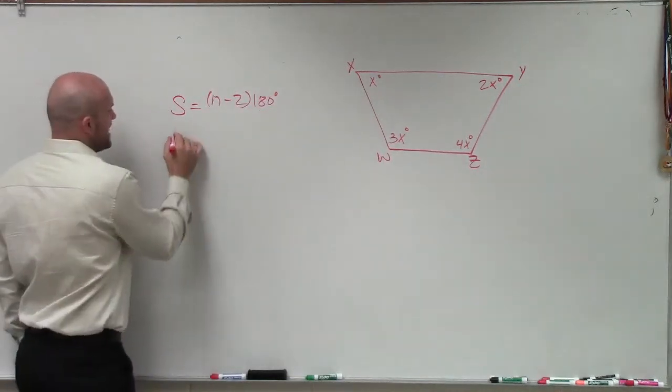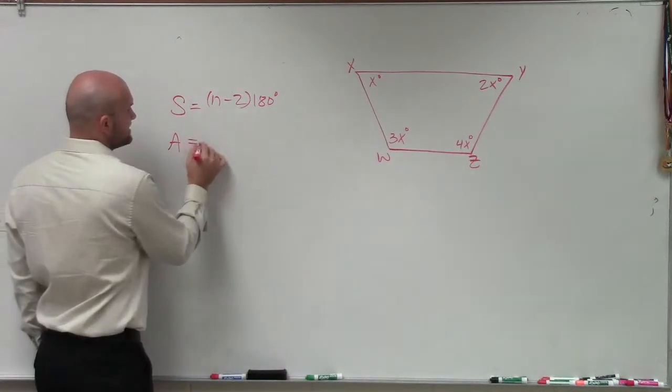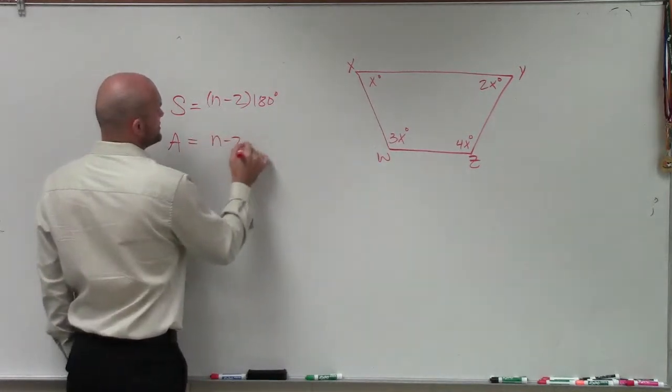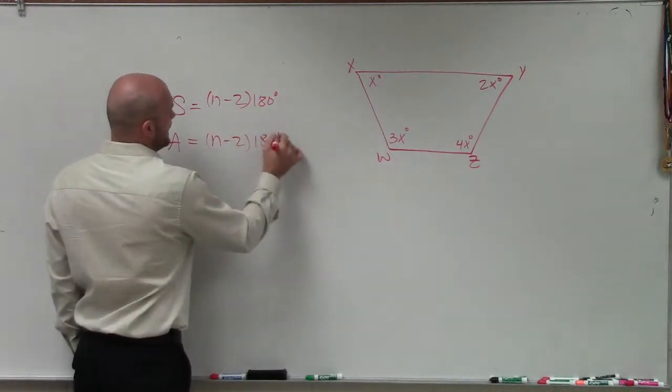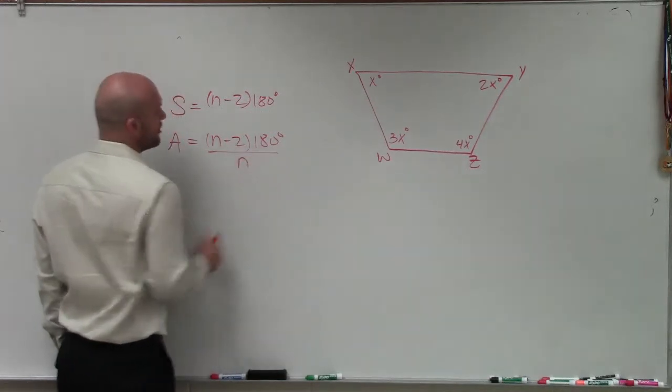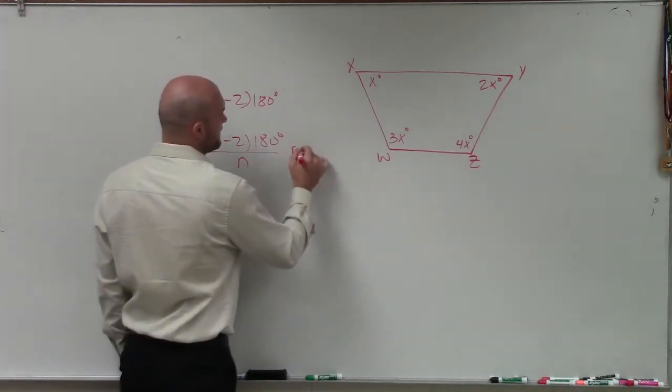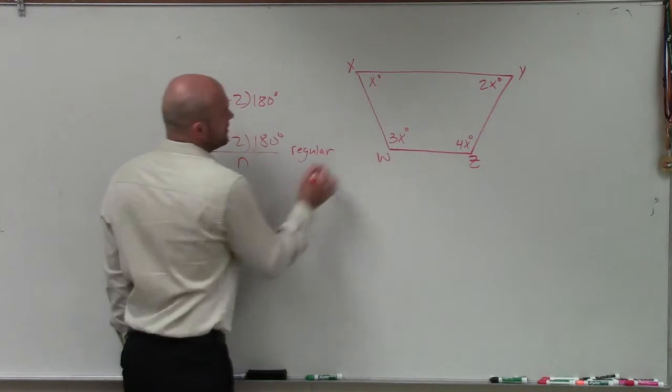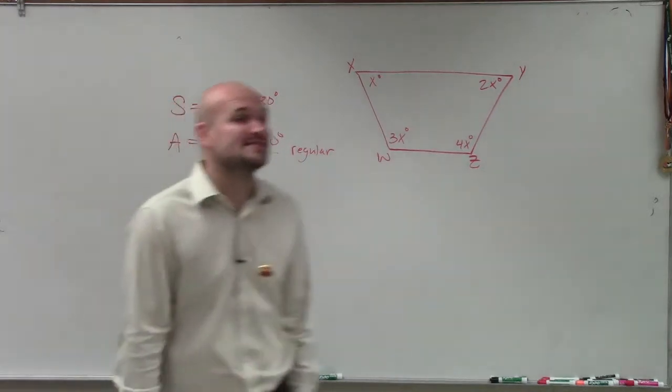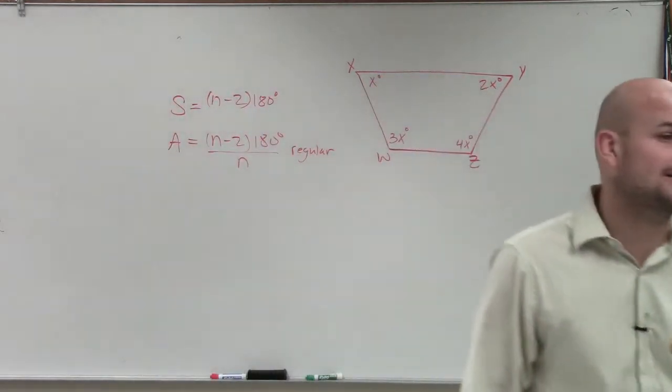We know that the formula for the sum of all interior angles is n minus 2 times 180 degrees. We know the other formula is the measure of one angle is equal to n minus 2 times 180 divided by n. But remember, that only works when we have a regular polygon. So that means a regular polygon, all the sides and all the angles have to be exactly the same.